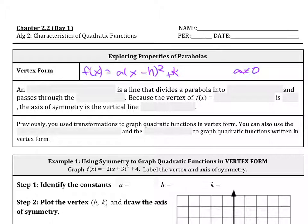An axis of symmetry is a line that divides a parabola into mirror images and passes through the vertex. Because the vertex of f(x) equals a times x minus h squared plus k is h, k, the axis of symmetry is a vertical line x equals h.